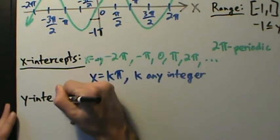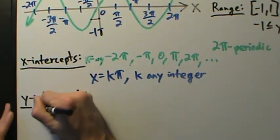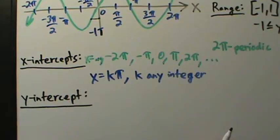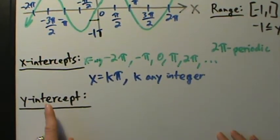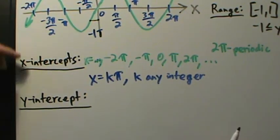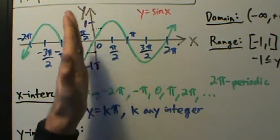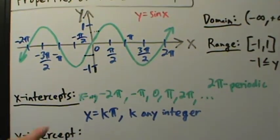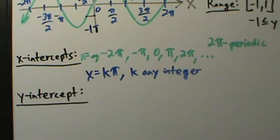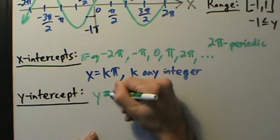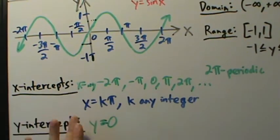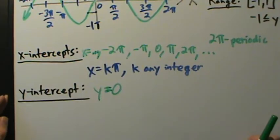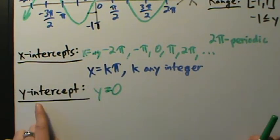Now the y-intercept. Y-intercepts are usually simpler because there's only one — or none at all — but never more than one for a function, since a function must pass the vertical line test. A y-intercept is a point where you're on the y-axis. Looking at the graph, we're on the y-axis right here at the point (0, 0), so the y-coordinate is 0. The y-intercept is y equals 0 — much simpler than the x-intercepts. So: x-intercepts are x equals kπ where k is any integer, and the y-intercept is y equals 0.